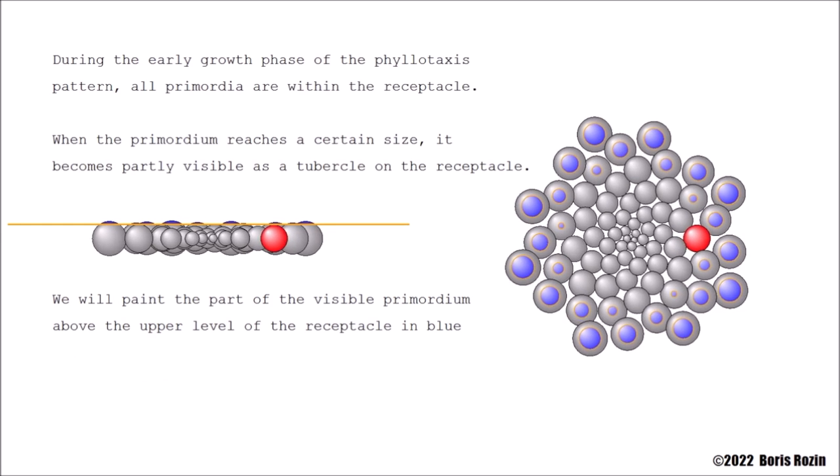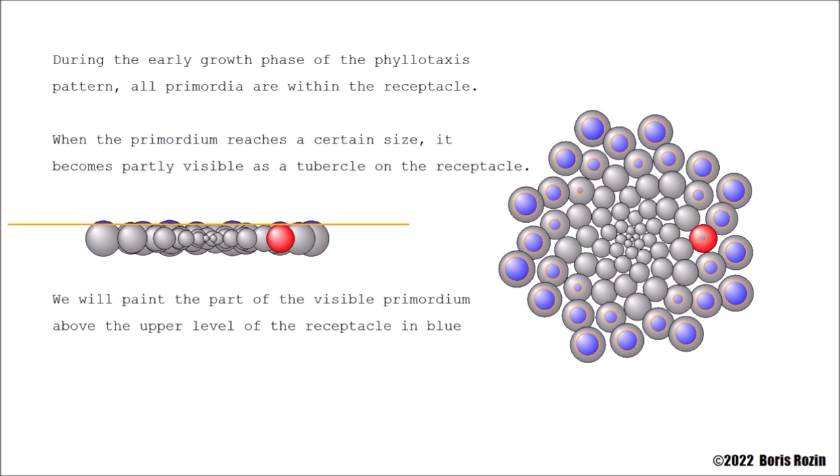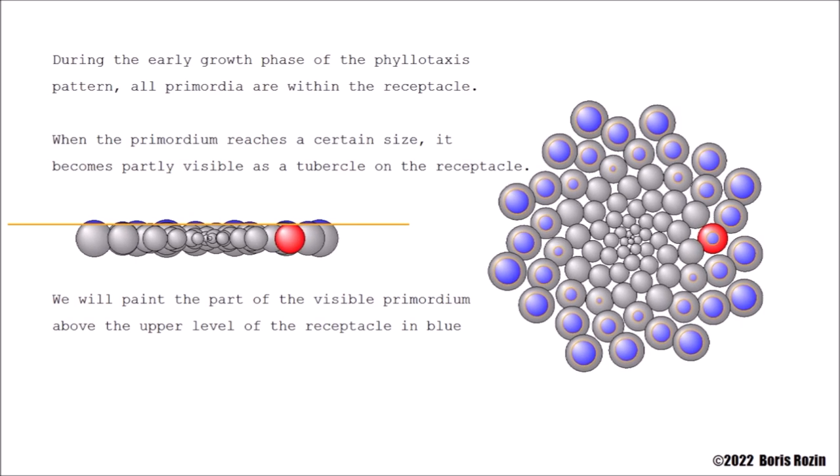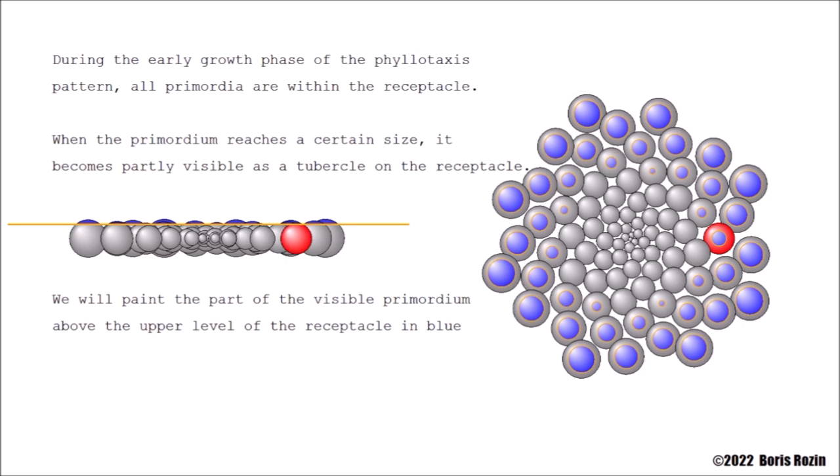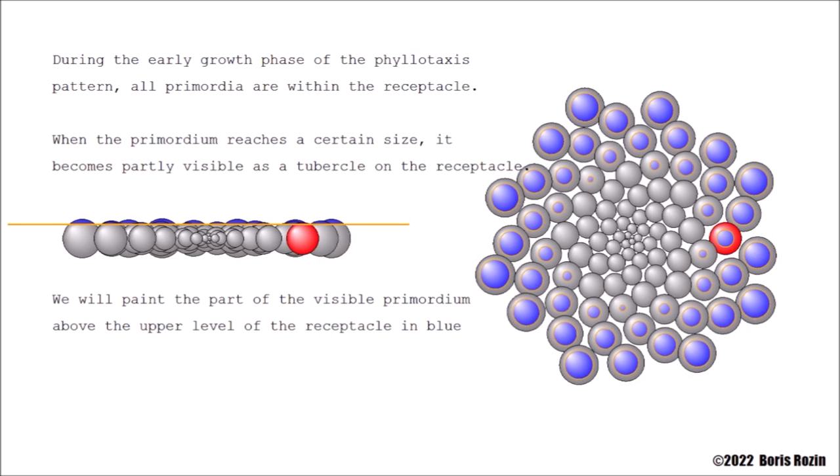During the early growth phase of the phyllotaxis pattern, all primordia are within the receptacle. When the primordium reaches a certain size, it becomes partly visible as a tubercle on the receptacle.